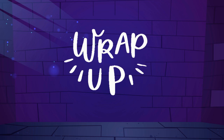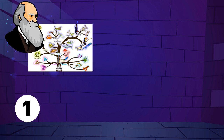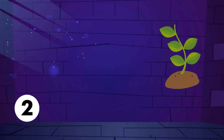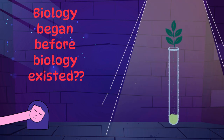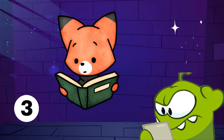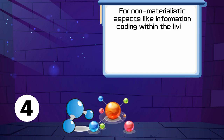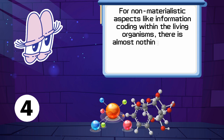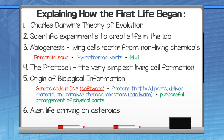Let's wrap it up. Firstly, Darwin's theory of evolution and biological evolution in general has nothing to do with explaining the initial origin of life. Secondly, the origin of life is prebiotic — before biology — so it's pure chemistry for the material aspect. Thirdly, the chemistry of life is very hard to figure out. And fourthly, for non-materialistic aspects like information coding within living organisms, there's almost nothing to explain how information can evolve on its own from chemistry. Nope, Darwin couldn't explain it then, and neither can neo-Darwinists do so today.